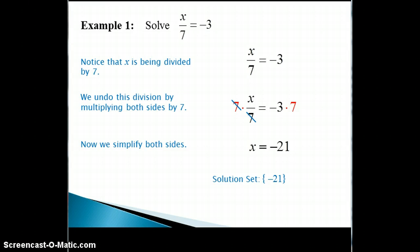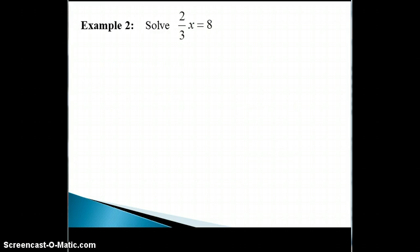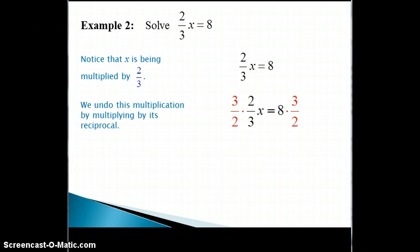Let's look at another example. Notice that x is being multiplied by 2 thirds. We could undo this multiplication by dividing both sides by 2 thirds. However, recall that dividing by a fraction is actually the same as multiplying by its reciprocal. And the reciprocal of 2 thirds is 3 halves. Thus we can multiply both sides by 3 halves to get x by itself.